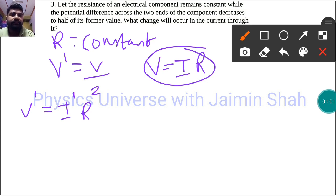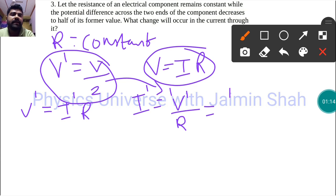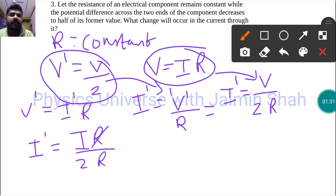I dash is equal to V dash upon R. Now put this V dash formula here. So I dash is equal to V by 2R. Now again put V formula in this equation. So I dash is equal to IR upon 2R. R will get cancelled out.